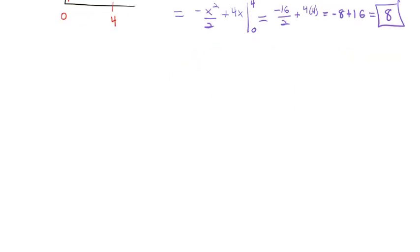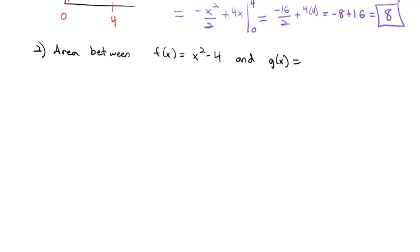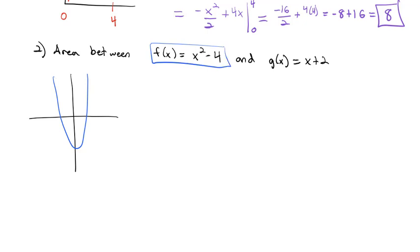That one was probably a little simple because those were all straight lines. Let's do a more interesting one. Let's find the area between f of x equals x squared minus 4 and g of x equals x plus 2. x squared minus 4 is a parabola that comes down 4 units. For g of x, x plus 2 has a y-intercept of 2 and a slope of 1.